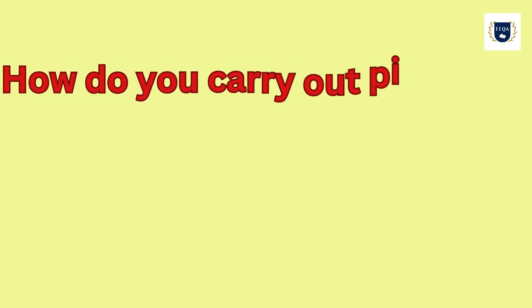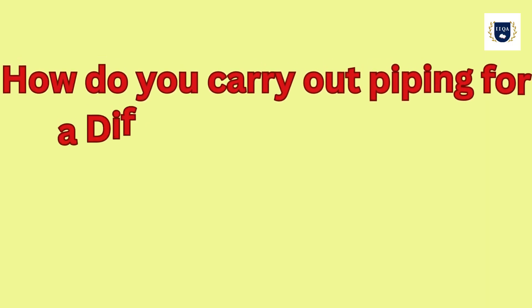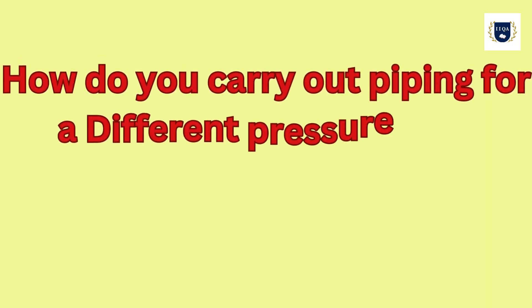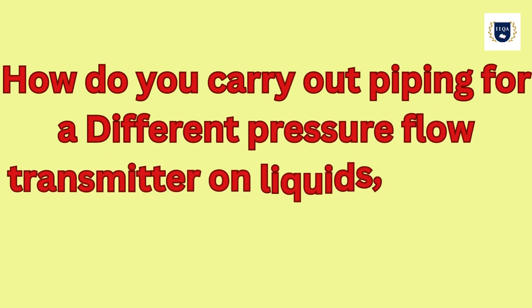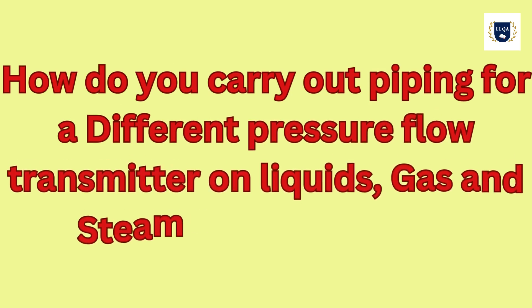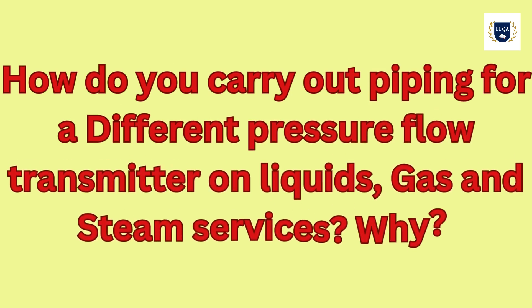How do you carry out piping for a differential pressure flow transmitter on liquids, gas and steam services? Why?